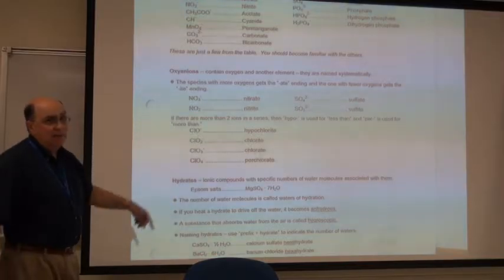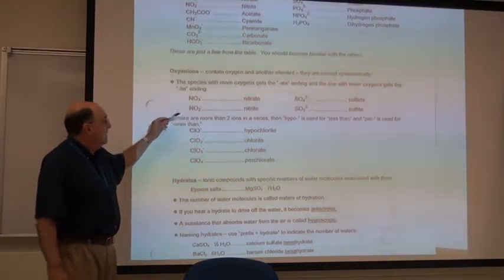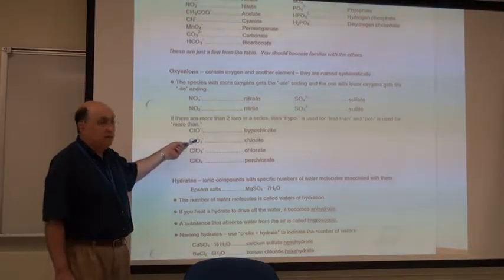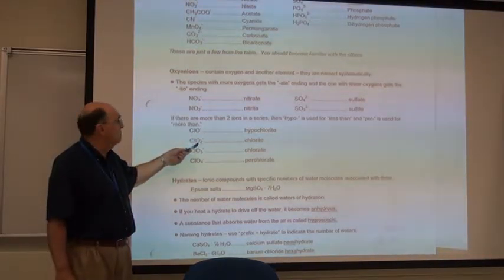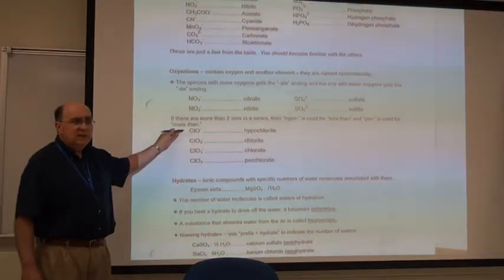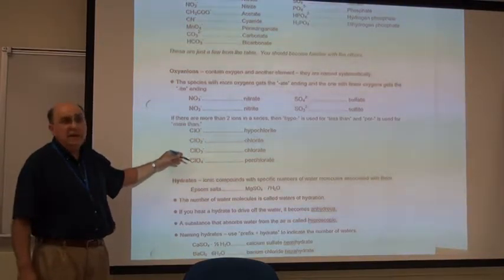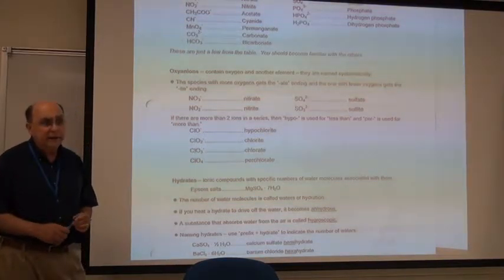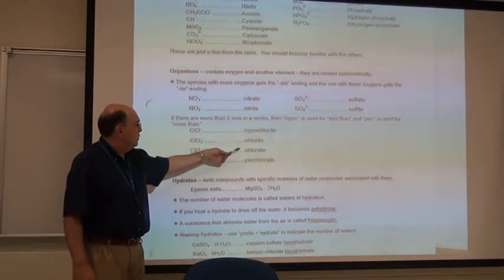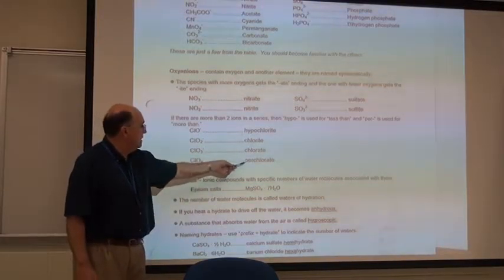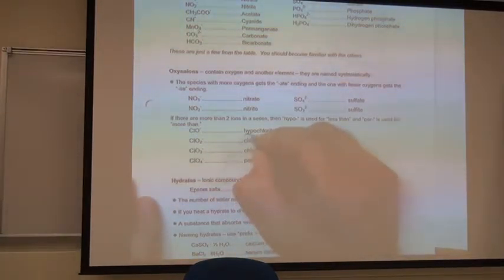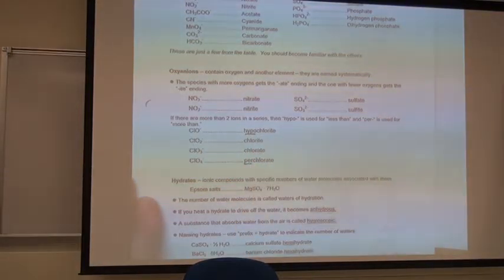Those are very common. We also have chlorite and chlorate. But the trick with chlorite and chlorate is you can have even fewer than two. So what do you do? What do you do if you have even fewer? What they do is put a hypo in front of it. Why do I not just ignore this and not even tell you about it? It's because these are important in everyday things. For example, sodium hypochlorite is regular bleach. That's Clorox. Chlorite is pretty popular. Chlorate, perchlorate. In this case, you put a PER in front. Hypo is even less. Per is even more.